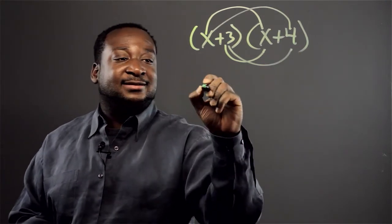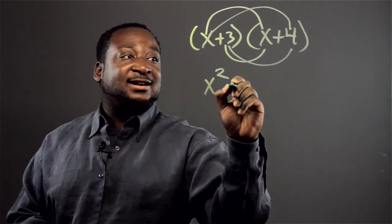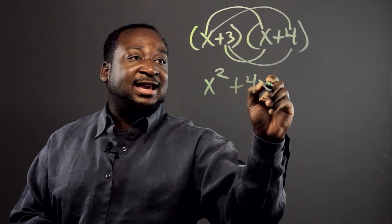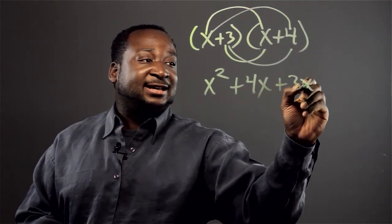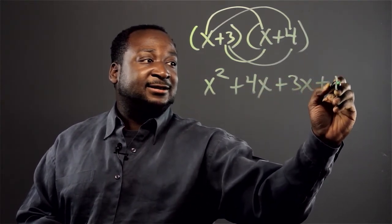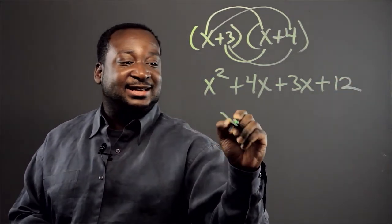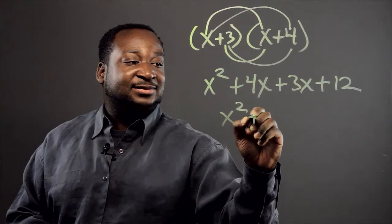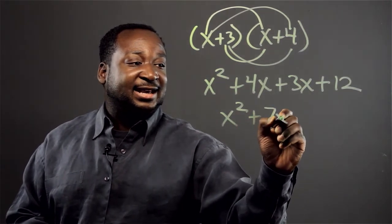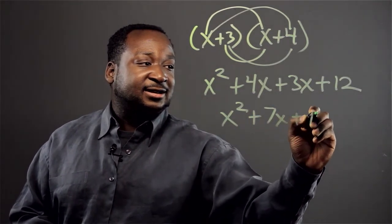So you get x squared plus 4x plus 3x plus 12. And then when we simplify this, we get x squared plus 7x plus 12.